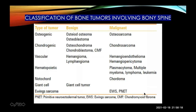The classification of spinal tumors is based on tumor type: osteogenic, chondrogenic, vascular, hematopoietic, and others. Osteogenic includes osteoid osteoma and osteoblastoma, which can progress to osteosarcoma. Chondrogenic includes osteochondroma, which can become chondrosarcoma. Vascular includes hemangioma. Hematopoietic tumors are usually malignant — plasmacytoma and multiple myeloma. Notochordal tumors, which are also malignant, are chordomas, usually seen in the sacrum. Giant cell tumor is benign but can be locally aggressive, and Ewing's sarcoma is another important entity.